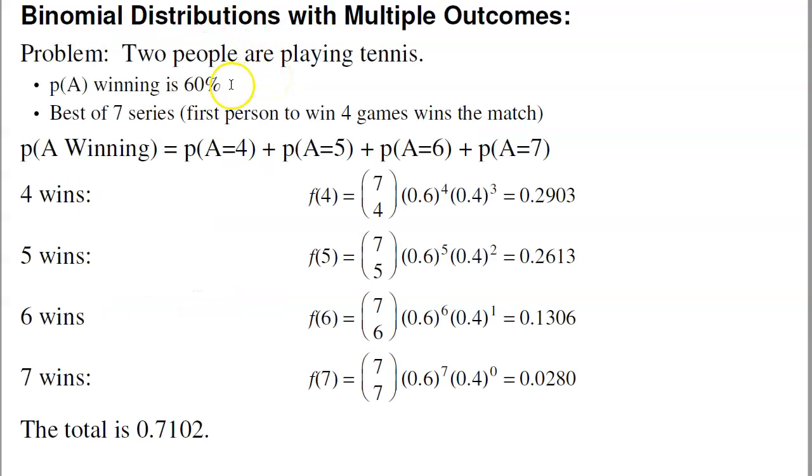And if you have multiple outcomes, such as the probability of getting at least, or two people playing games of tennis, player A wins 60% of the time, best of seven series. That's the probability that A wins. If I play seven games, A could win four, five, six, or seven, any of those result in A winning. It's just the probability of rolling a four, of four heads, plus probability of five heads, plus six heads, plus seven heads, add them all up. A's got a 71% chance of winning the match.